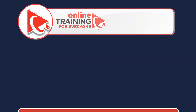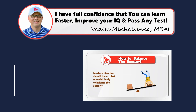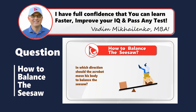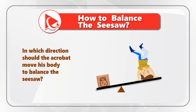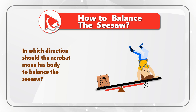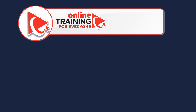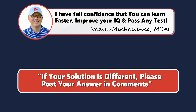Do you have any hints on how to best solve these types of challenges? If you do, please post them in comments. Now I have a question for you to practice your skills. You are presented with a seesaw — on the left there is a weight, and on the right side there is an acrobat. You need to determine in which direction the acrobat should move his body to balance the seesaw: Choice A to the left, or Choice B to the right. Pause the video and post your answer in comments so I can give you feedback.